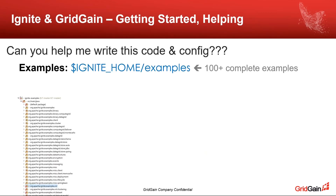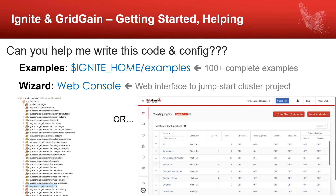The first is a huge repository of examples covering almost every core feature in Ignite. The other way is to use the GridGain web console, which is openly available for Ignite and GridGain customers — available on-prem or in the cloud.